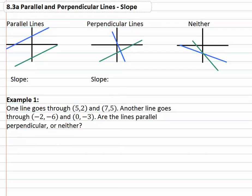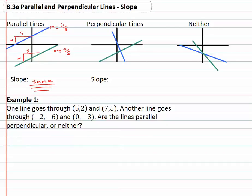If they're going to go in the same direction, and the blue line rises two and runs five, the green line must do the exact same thing — rise two and run five. So the slope of the blue line is two-fifths, and the slope of the green line is two-fifths. To go the same direction, they must have the same slope. Parallel lines have the same slope — that's the first thing you need to remember for this video.